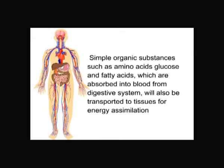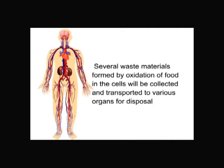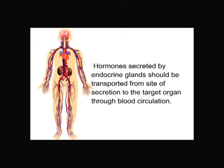Simple organic substances such as amino acids, glucose, and fatty acids, which are absorbed into blood from the digestive system, are transported to tissues for energy assimilation. Several waste materials formed by oxidation of food in the cells are collected and transported to various organs for disposal. Hormones secreted by endocrine glands are transported from the site of secretion to the target organ through blood circulation.